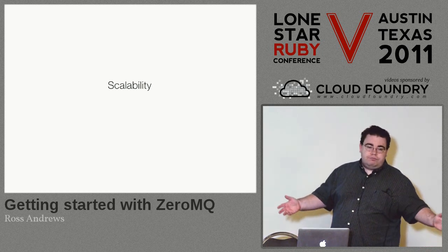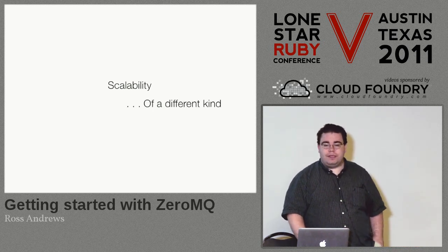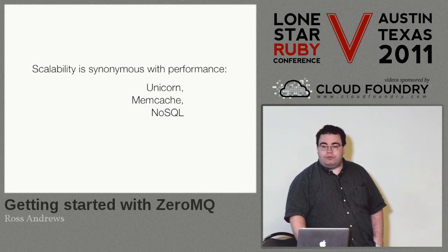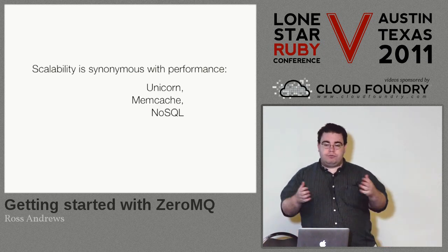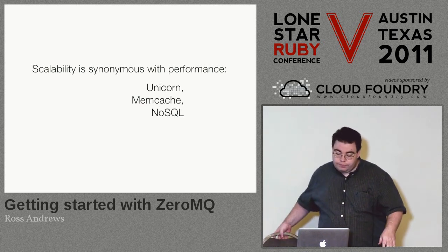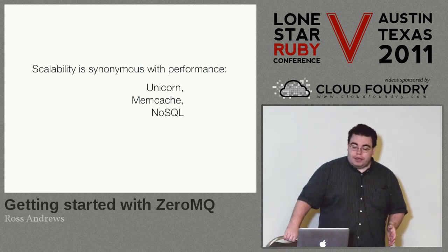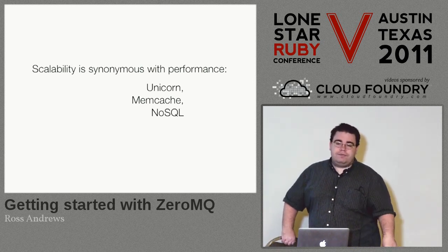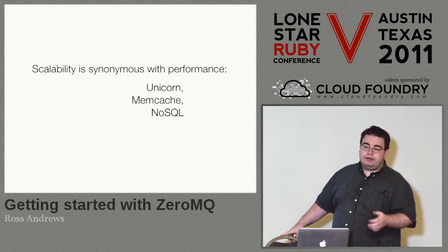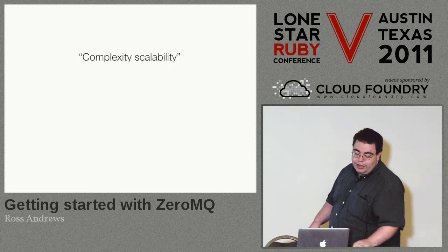Rails people are super obsessed with scalability, but this is scalability of a different kind. Most of the time when we talk about scalability we're talking about performance — serve more requests faster, use less memory, handle more users. But you're hardly ever just growing in performance requirements. You hire more people, you have more features, you have more special cases in your data. You also need to deal with complexity scaling.